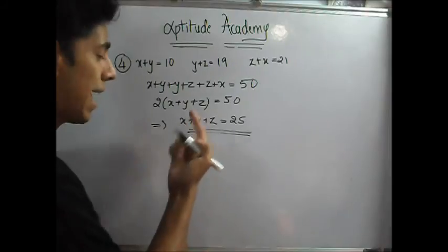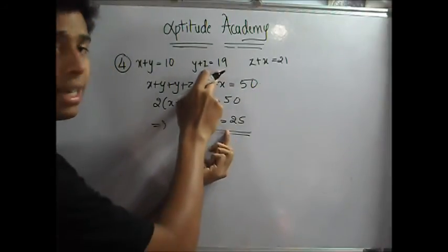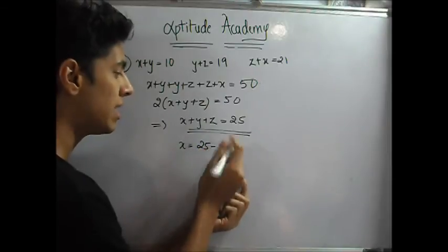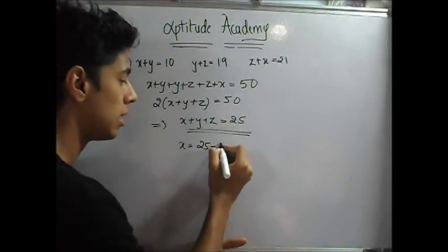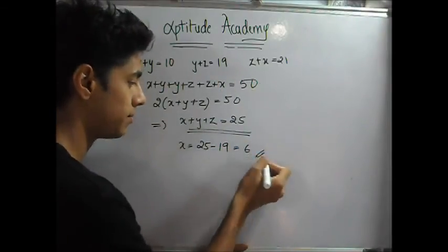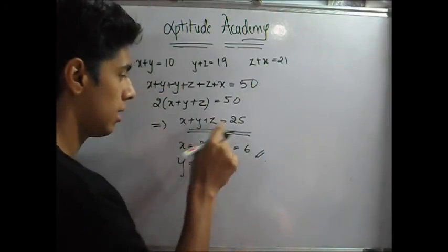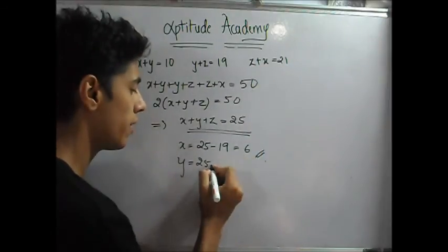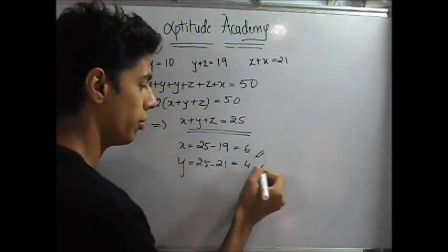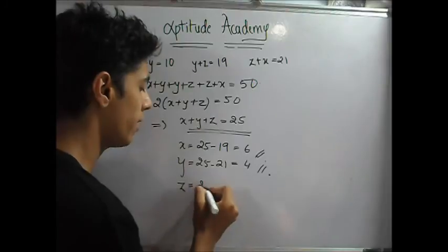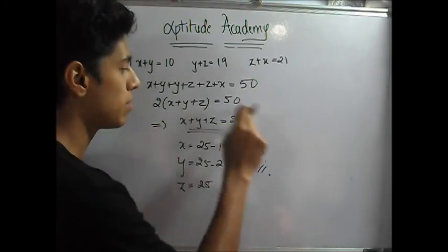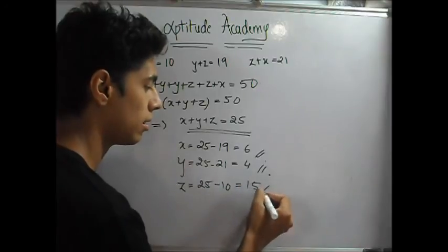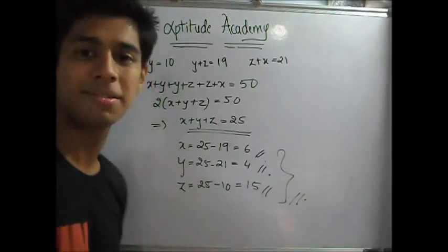If you want to find x, what is y plus z? 19. So x is equal to 25 minus y plus z. What is y plus z? 19. So x is equal to 6. What is y? y is equal to 25 minus x plus z. What is x plus z? 21. 25 minus 21, so 4. What is z? z is equal to 25 minus x plus y. x plus y is 10. So 25 minus 10, 15. These are the 3 numbers.